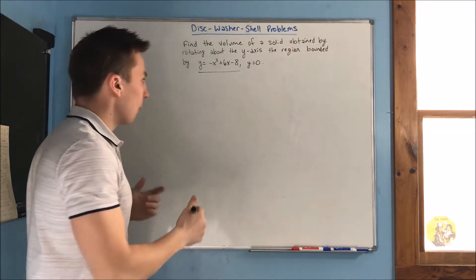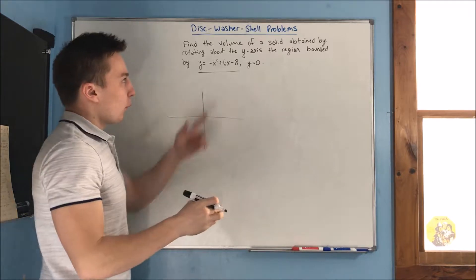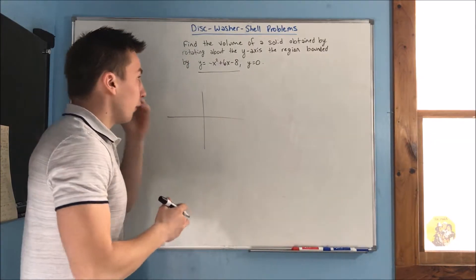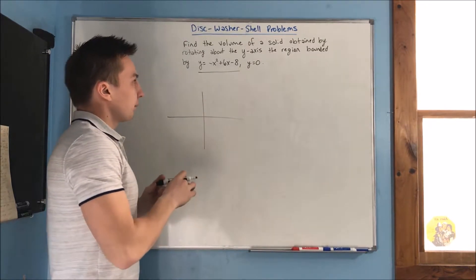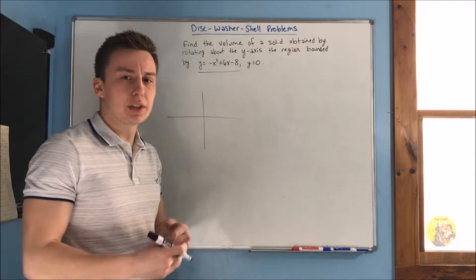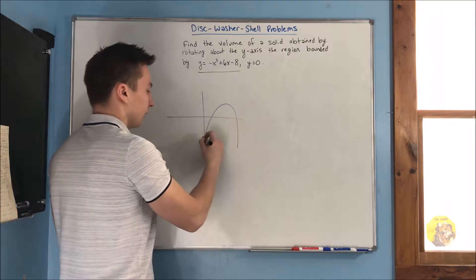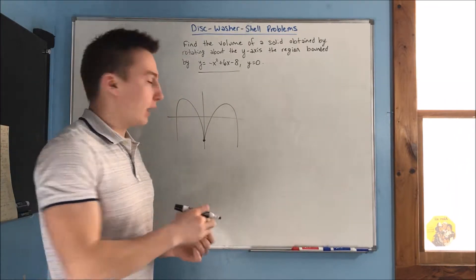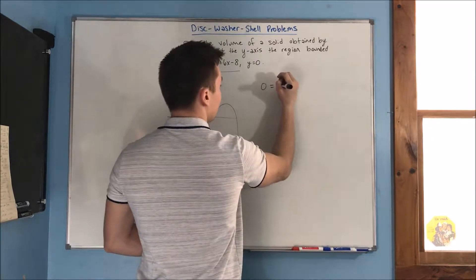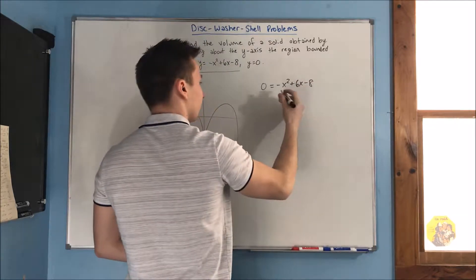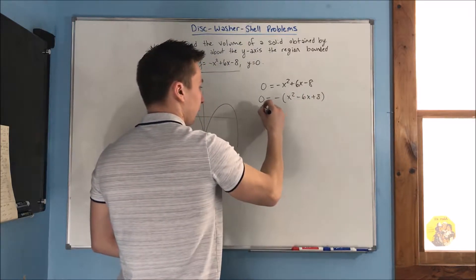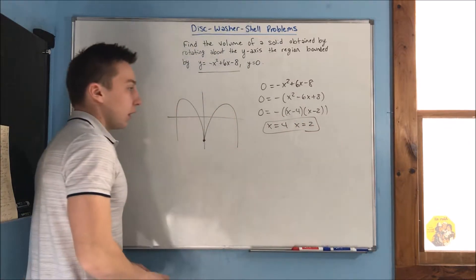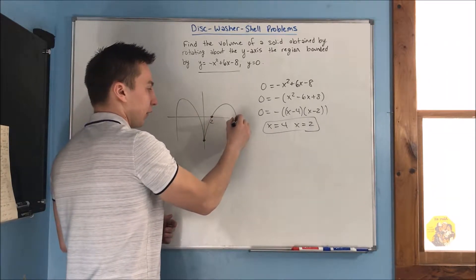We know this graph is going to be an upside-down parabola with a y-intercept of negative 8. The plus 6x term causes some horizontal shift, but we're not sure by how much. To figure out which shape this is, we find the x-intercepts by setting the equation equal to zero. We factor out a negative and get x equals 2 and x equals 4.